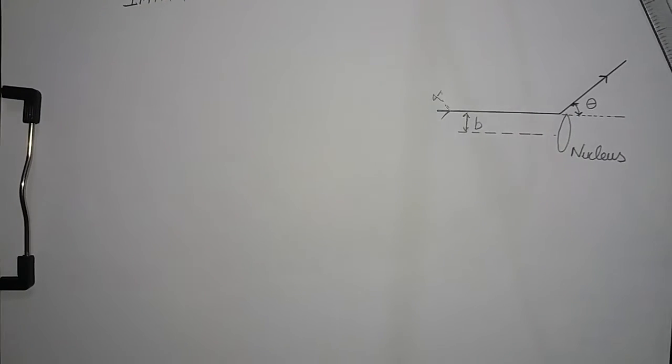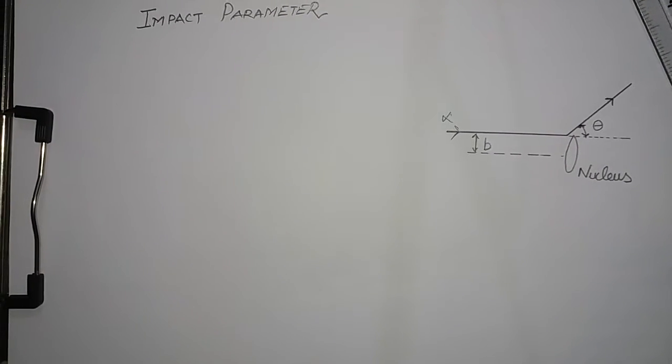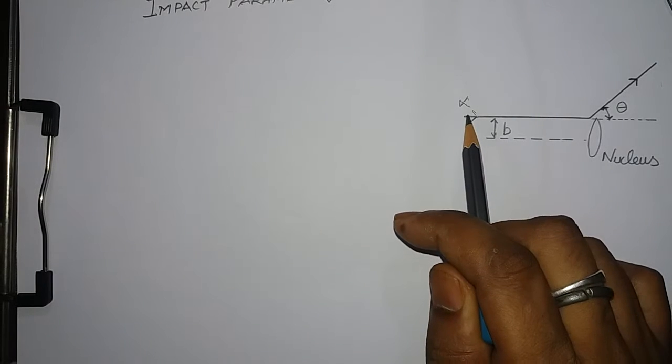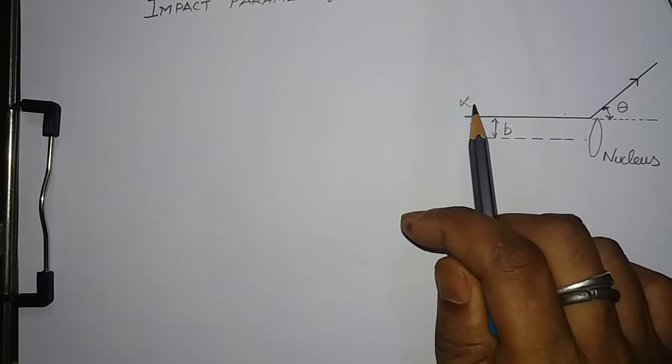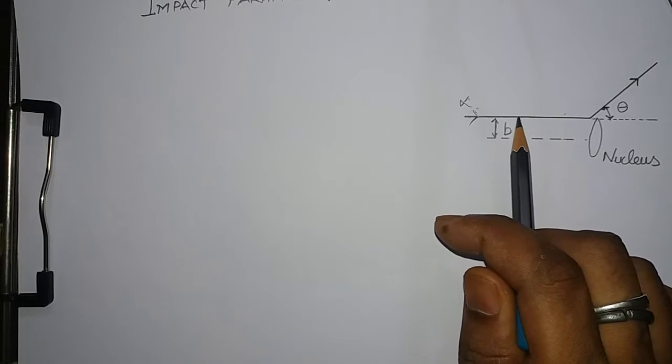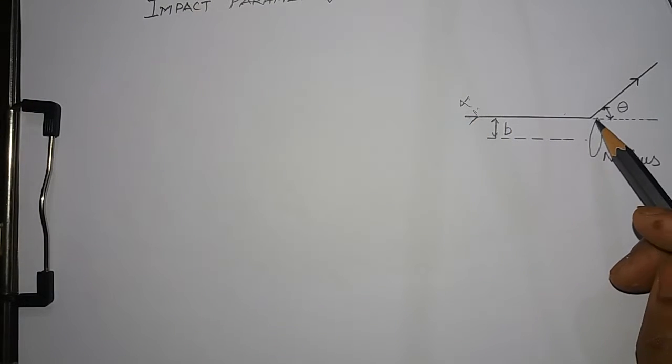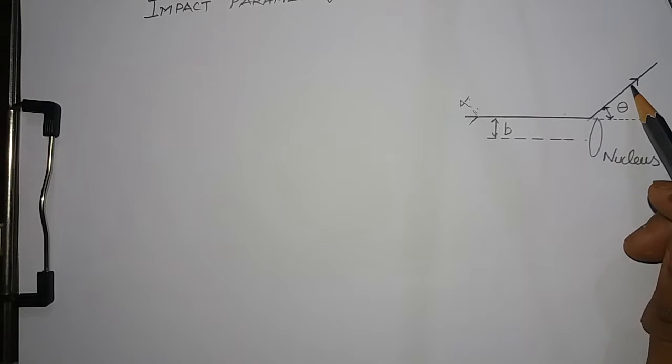Impact parameter: this is an alpha particle moving towards the nucleus. Both have positive charge, and the alpha particle will deviate from its path.